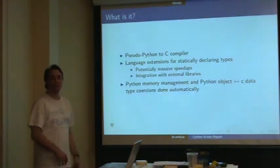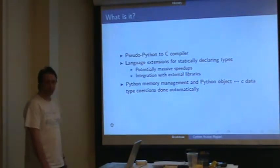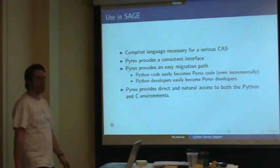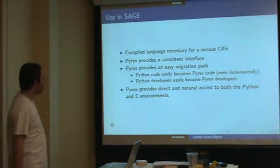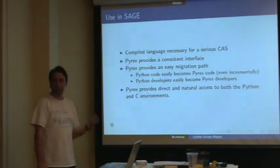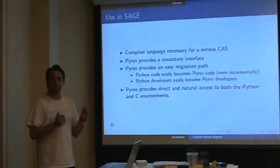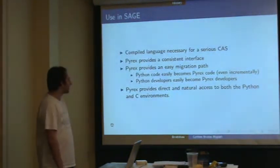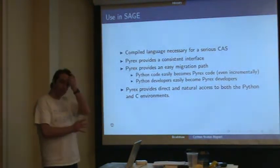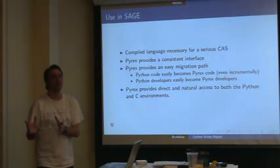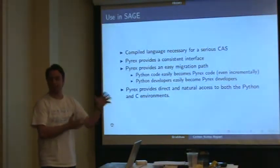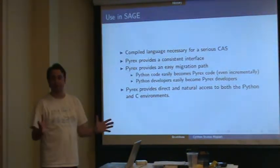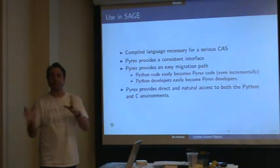It's much easier than writing your own interface from scratch in C or using other tools like SWIG. This is why we use it in Sage — we need a compiled language to do things fast and to incorporate other libraries. Pyrex provides a consistent interface between our Python code base and our Pyrex code base.